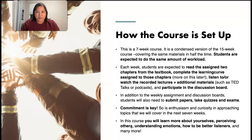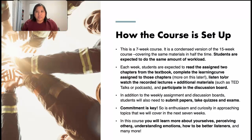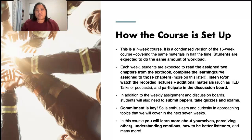When we talk about how the course is set up, this is a seven-week course. It is a condensed version of the 15-week course covering the same materials in half the time. Students are expected to do the same amount of workload put into 15 weeks, but condensed to seven weeks. Each week, students are expected to read the assigned two chapters from the textbook, complete the learning curve assigned to those chapters, listen to or watch the recorded lectures and additional materials such as TED talks or podcasts, read short articles, and participate in the discussion boards. In addition to weekly assignments and discussion boards, students will also need to submit papers, take quizzes, and exams.